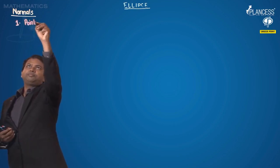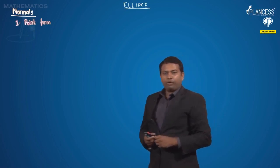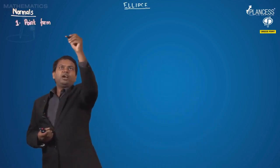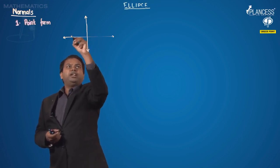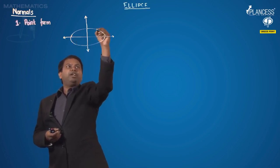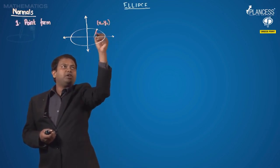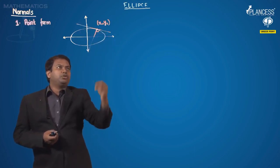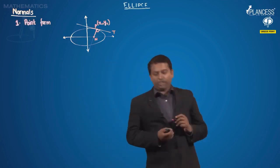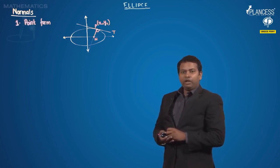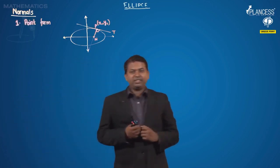The first one is the point form. Basically, a point is given to us which is lying on the ellipse and we need to find the equation of the normal at this particular point. Consider an x-axis, a y-axis, and an ellipse. Let us say there is a point x1, y1 lying on the ellipse. Here PT is a tangent and PN is the normal. To find the equation of line PN we need two things — the slope and the point — so that we can use the point-slope form of the equation of a straight line.